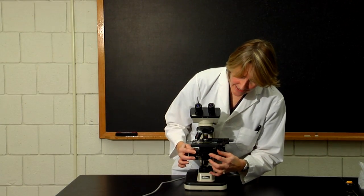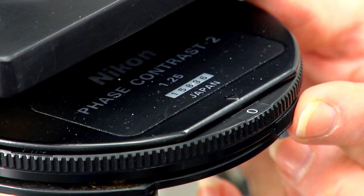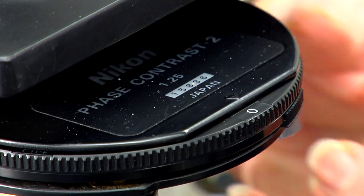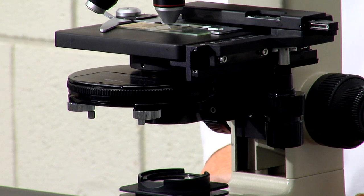For brightfield microscopy, you should place this at approximately partial open, half open. Allowing too much light to pass through the lens will make the sample appear washed out, and so when you view your sample, you may need to close the iris diaphragm further to get better contrast on your object.